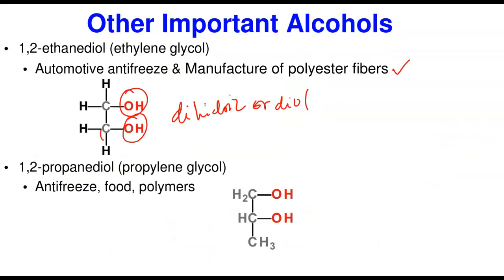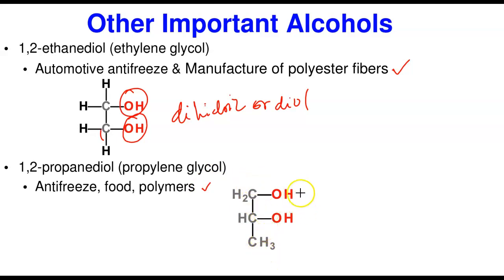We also have 1,2-propanediol, or propylene glycol. It is used as an antifreeze and in food and polymer manufacturing. It has three carbons, with OH groups on carbons one and two — hence 1,2-propanediol. It is also a diol, just like 1,2-ethanediol.